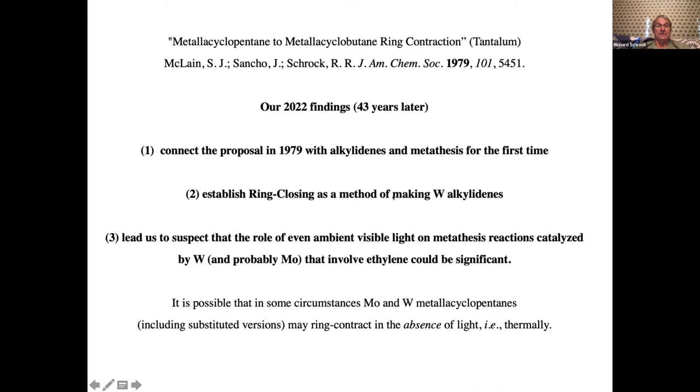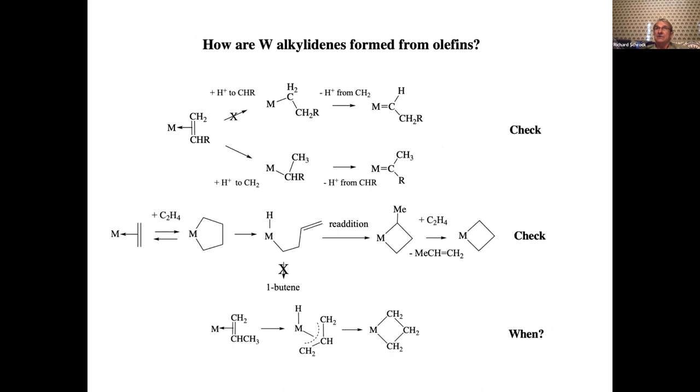So this connects that proposal in 1979 with metathesis for the first time. It establishes ring closing. This is the first time that anybody's seen these ring closing reactions. And, importantly, leads us to suspect that even ambient visible light can play a role in metathesis reactions, which nobody has ever proposed or observed before. I think it's possible that molybdenum and tungsten metallicyclopentanes can do this contraction reaction thermally. And I think even substituted versions of these metallicycles can contract in the absence of light, that is, do it thermally. So this is, I think, although it's not conclusive.